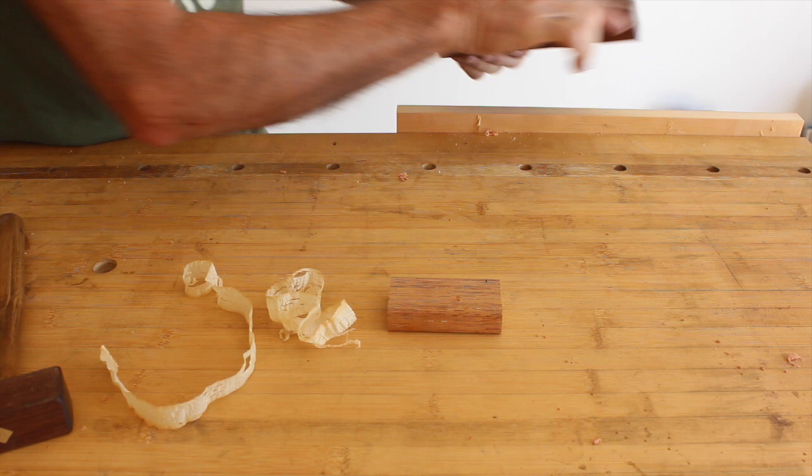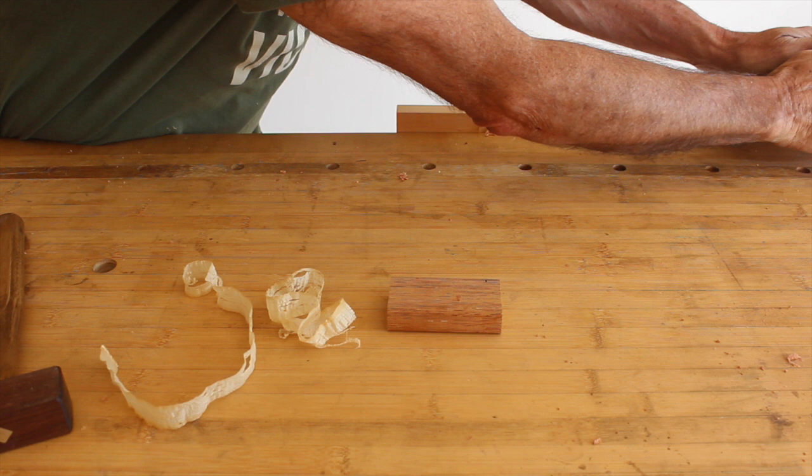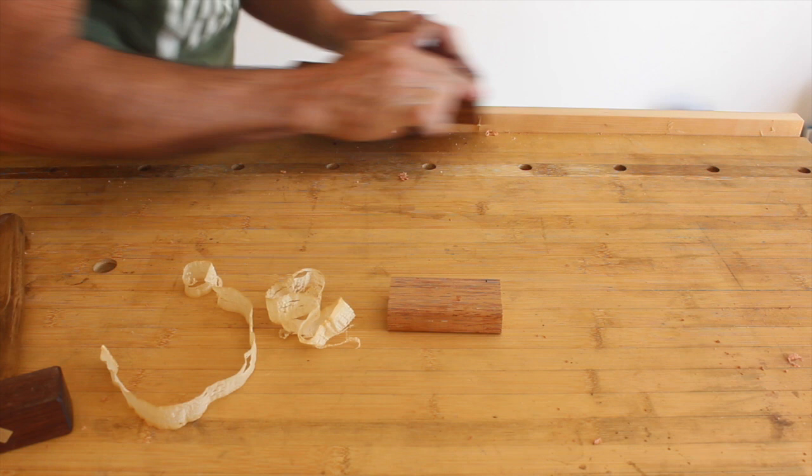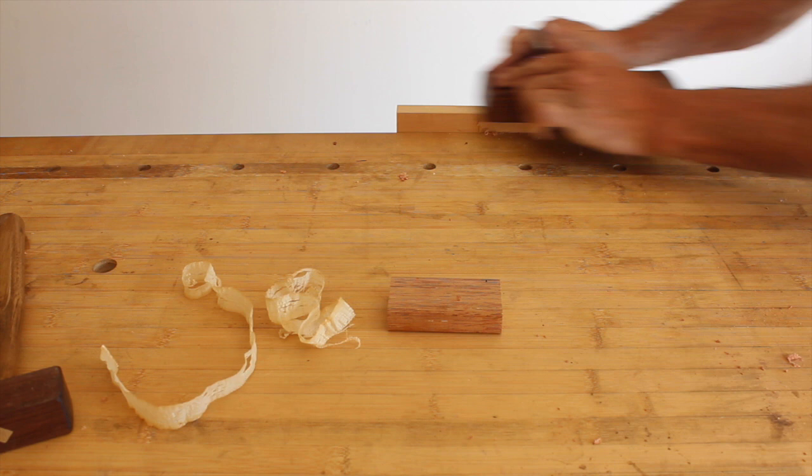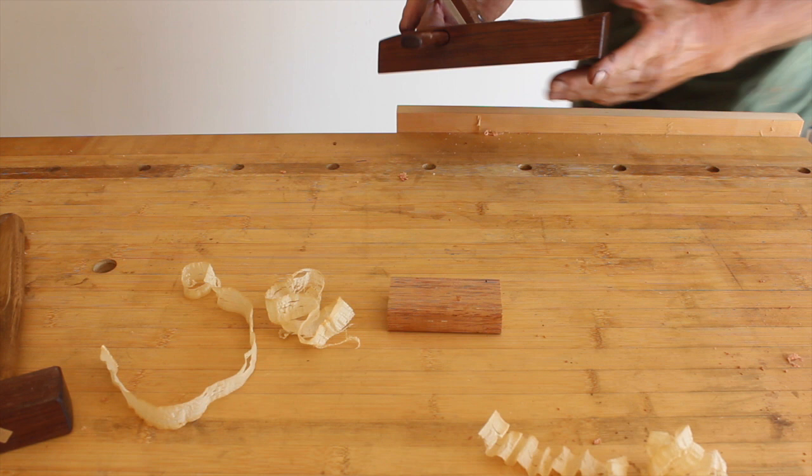But if you want to pull the plane, fingers at the back and this part of your hand on the front. Same again, if you can get squarely onto the piece of wood, you'll get better control. The advantage of being able to push and pull is significant in some cases.